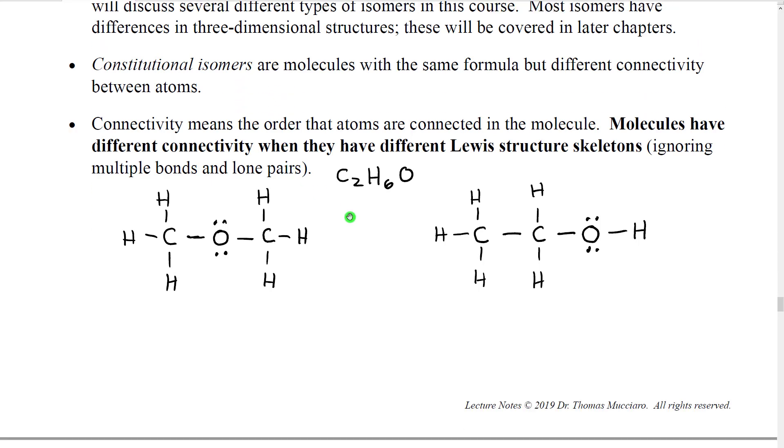Let's talk about connectivity. Connectivity is the order that atoms are connected in the molecule. Molecules have different connectivity when they have different Lewis structure skeletons. Remember when we talked about drawing the skeleton and then adding the multiple bonds and the lone pairs? Well, when we have different skeletons, ignoring the lone pairs, if those skeletons are different, if they're connected together differently, those are constitutional isomers.